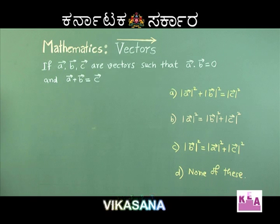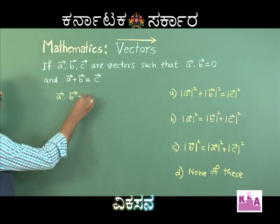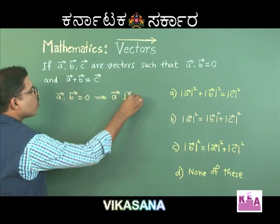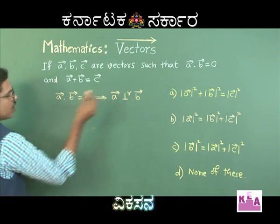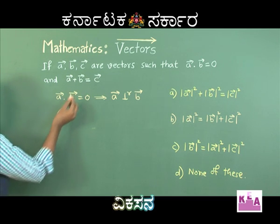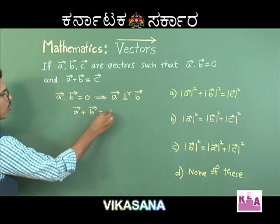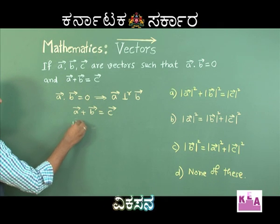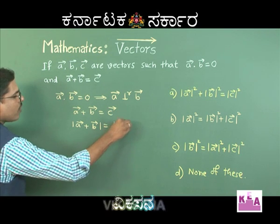In this question, since vector A dot vector B is equal to 0, vector A is perpendicular to vector B. That is, the angle between vector A and vector B is 90 degrees. We will take this result: vector A plus vector B is equal to vector C. Apply magnitude on both sides.